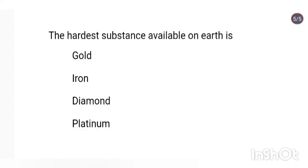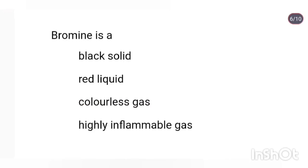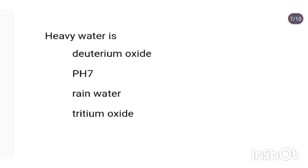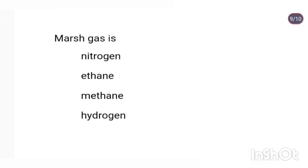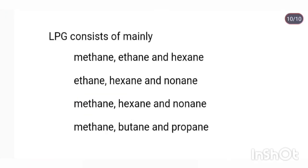The hardest substance available on earth is diamond. Bromine is a red liquid. Heavy water is deuterium oxide. What is laughing gas? Nitrous oxide. Marsh gas is methane. LPG consists of mainly methane, butane, and propane.